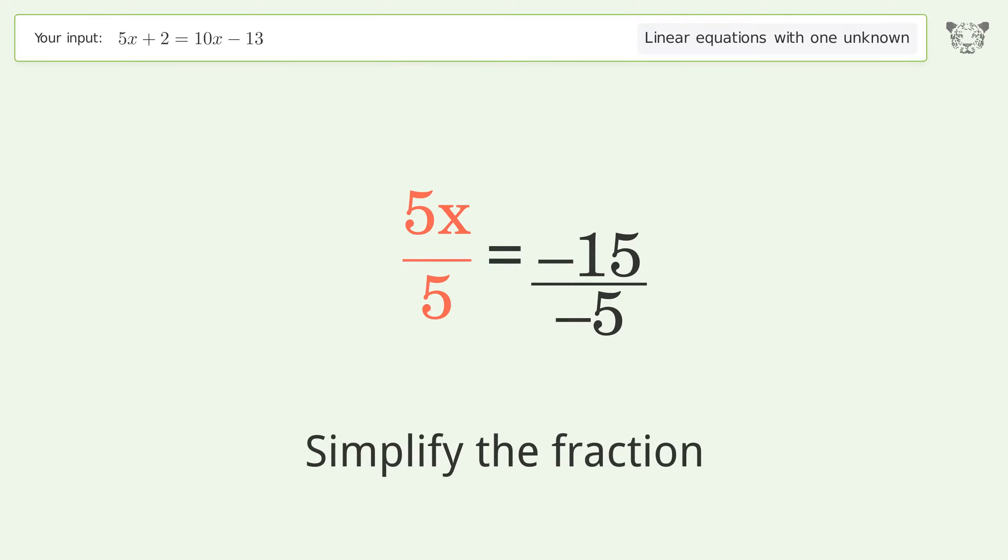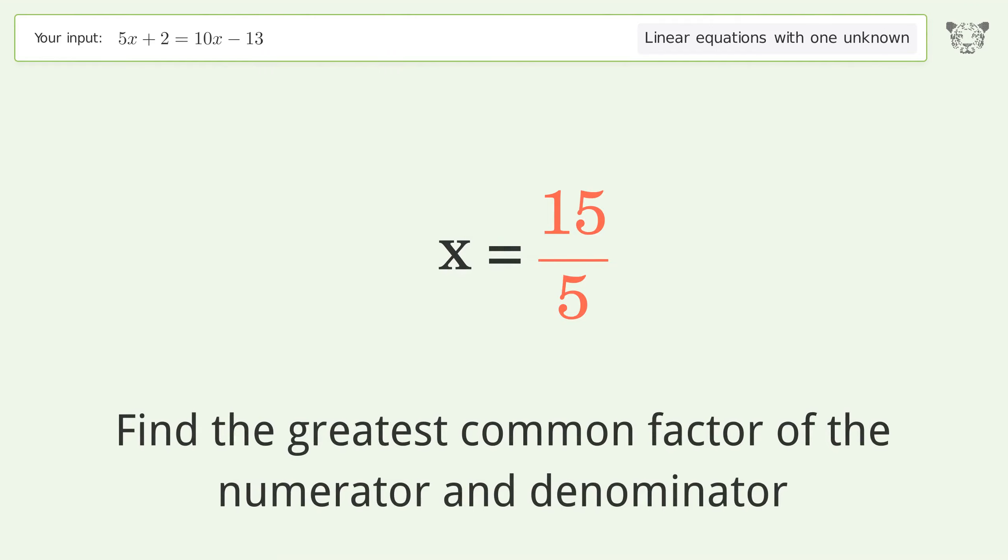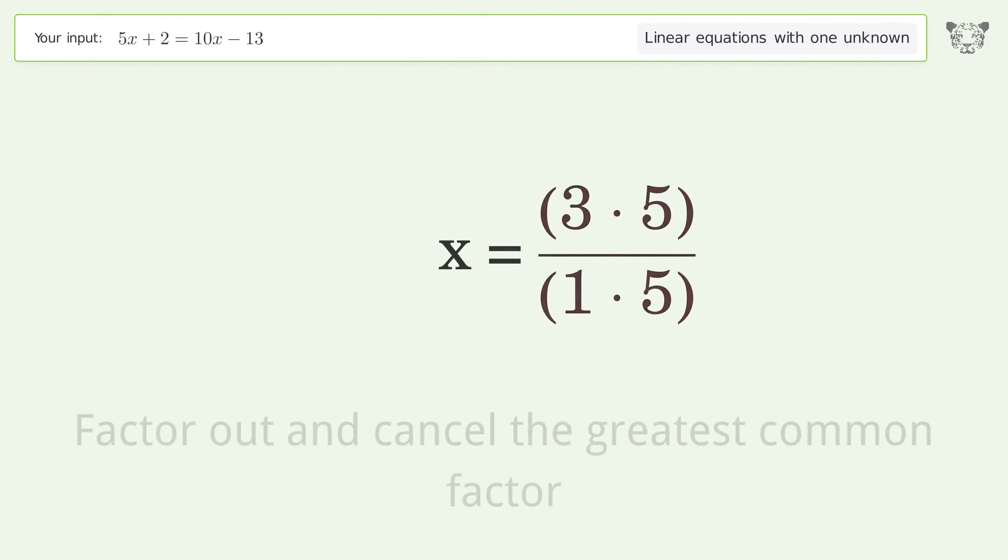Simplify the fraction. Cancel out the negatives. Find the greatest common factor of the numerator and denominator. Factor out and cancel the greatest common factor.